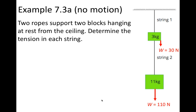Each block has the weight acting down, and weight is the force of gravity exerted by the earth — the earth is external to our two-block system. The tension in string 2 is going to act between the objects within the system, so that is internal to our two-block system. And then we have the external force, tension in string 1, that's external to our two-block system.